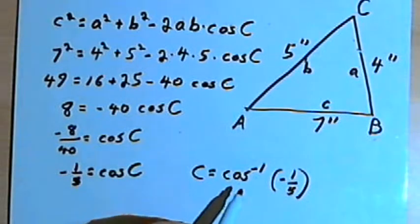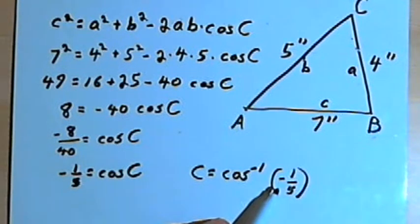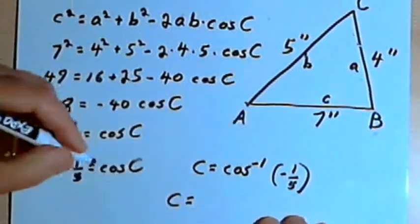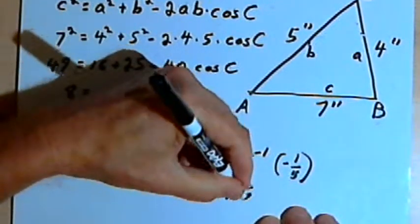So into the calculator, I would use the inverse cosine button and then take the inverse cosine of negative 1 fifth. I've done that already. And that equals approximately 101.5 degrees.